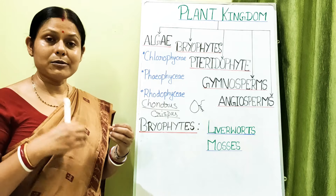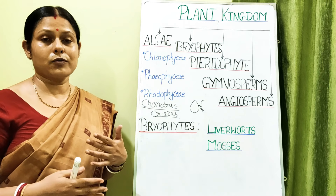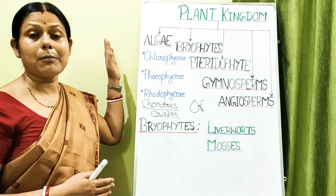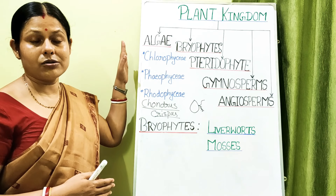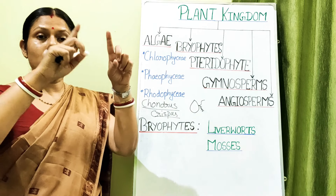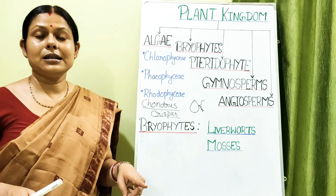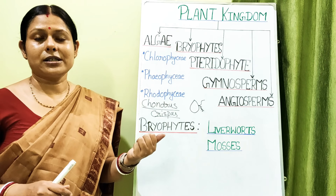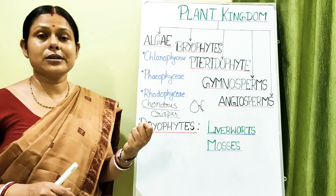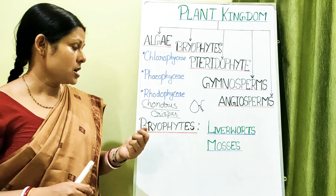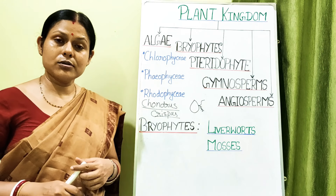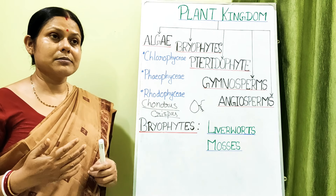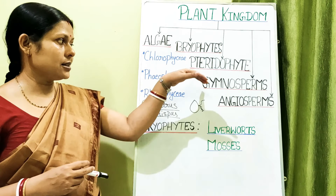This is called alternation of generation — alternating between gametophytic and sporophytic plant bodies. In algae, it is haplontic alternation of generation, meaning the majority of the life cycle is occupied by the gametophytic plant body and the sporophyte is restricted to the zygote. In bryophytes, a haplontic life cycle is also seen, but we sometimes describe bryophytes as showing haplodiplontic type.